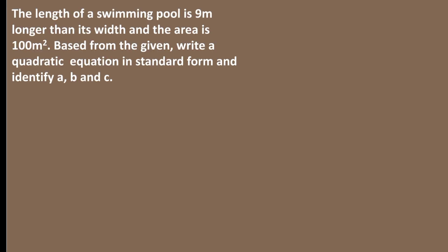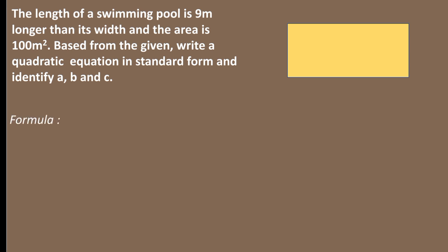Let us apply this to a real-life problem. The length of a swimming pool is 9 meters longer than its width, and the area is 100 m². We need to write a quadratic equation in standard form and identify the values of a, b, and c. We represent the width as x, so the length is x + 9 meters.